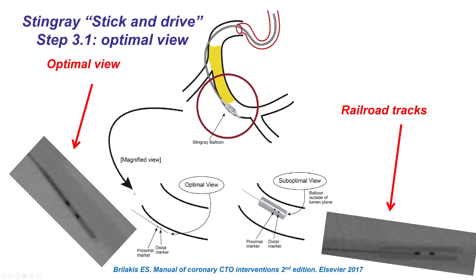The classic way to do the Stingray is the stick-and-drive technique, in which the Stingray is advanced distal to the distal cap. Then views are obtained trying to make the Stingray balloon look like a single line versus the railroad track appearance, because looking at the balloon en face versus from the side determines which surface faces which direction. The preferred view is the single line, because one surface will face one direction and the other the opposite direction.